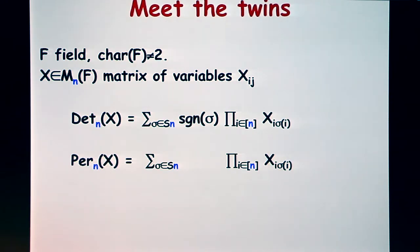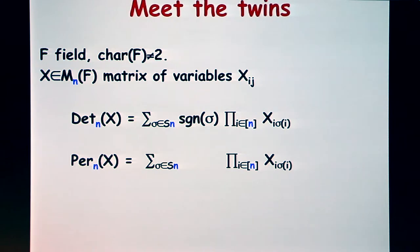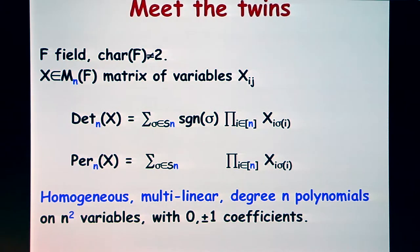The determinant of the matrix has this very simple expression: a sum over all permutations, then the product of the monomial corresponding to the diagonal, with the sign. The permanent, its sibling, is exactly the same without the sign, so they look very much alike structurally. They are both homogeneous, multilinear, degree n in these n-squared variables, and they have very simple coefficients, zero or one.